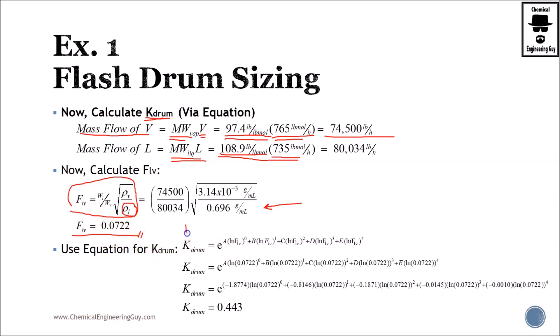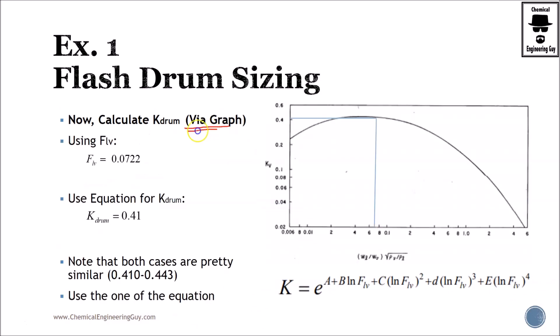Now that we got FLV, we will use the equation. Remember that we need to substitute everything. I'm substituting the natural logarithm here. And we get all this long equation. The final value is 0.443. I like to do it both ways. I don't trust that much the graph, but let's do it anyways.